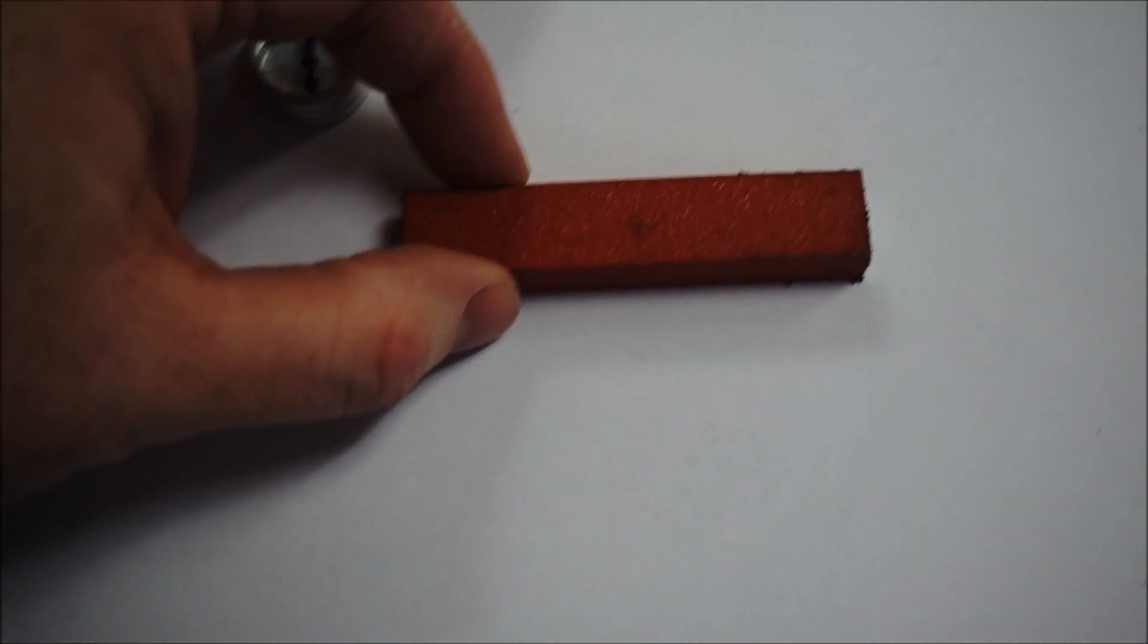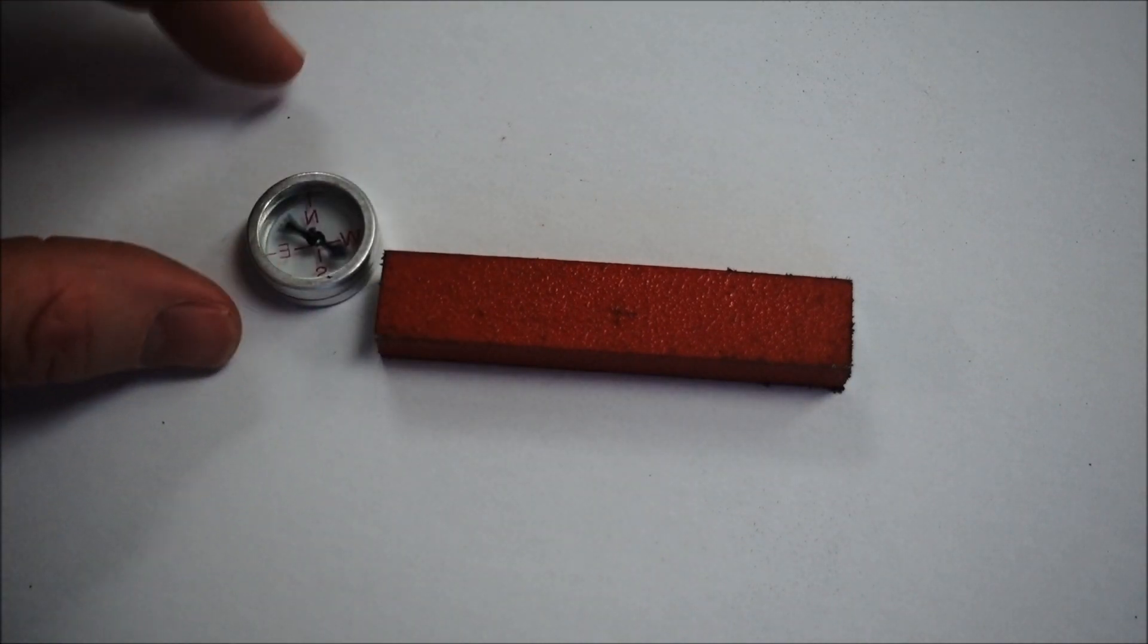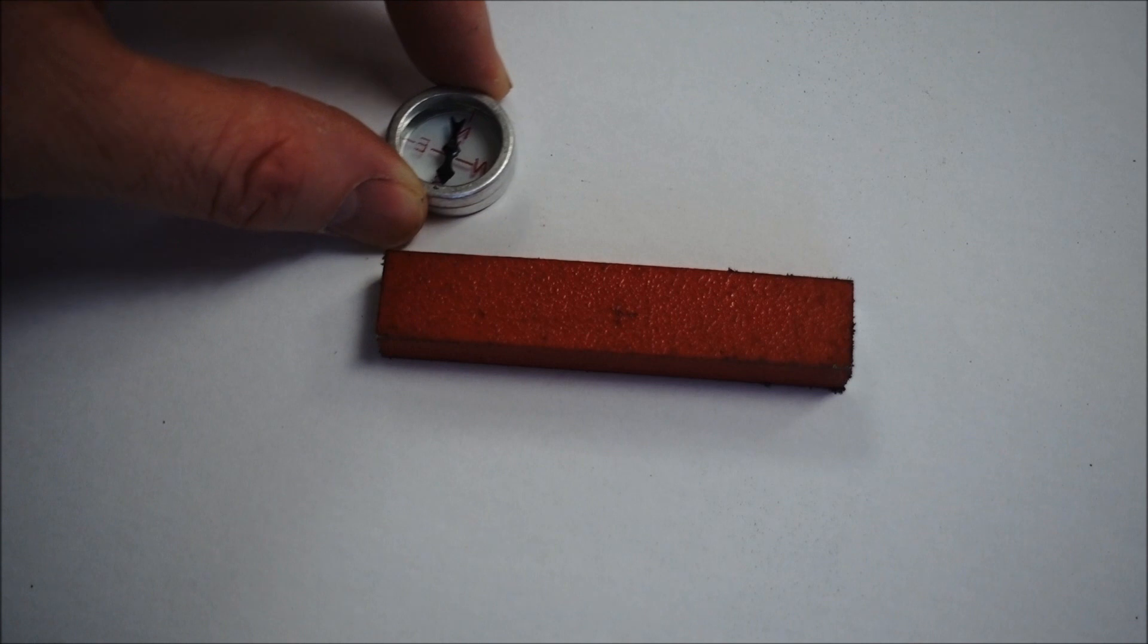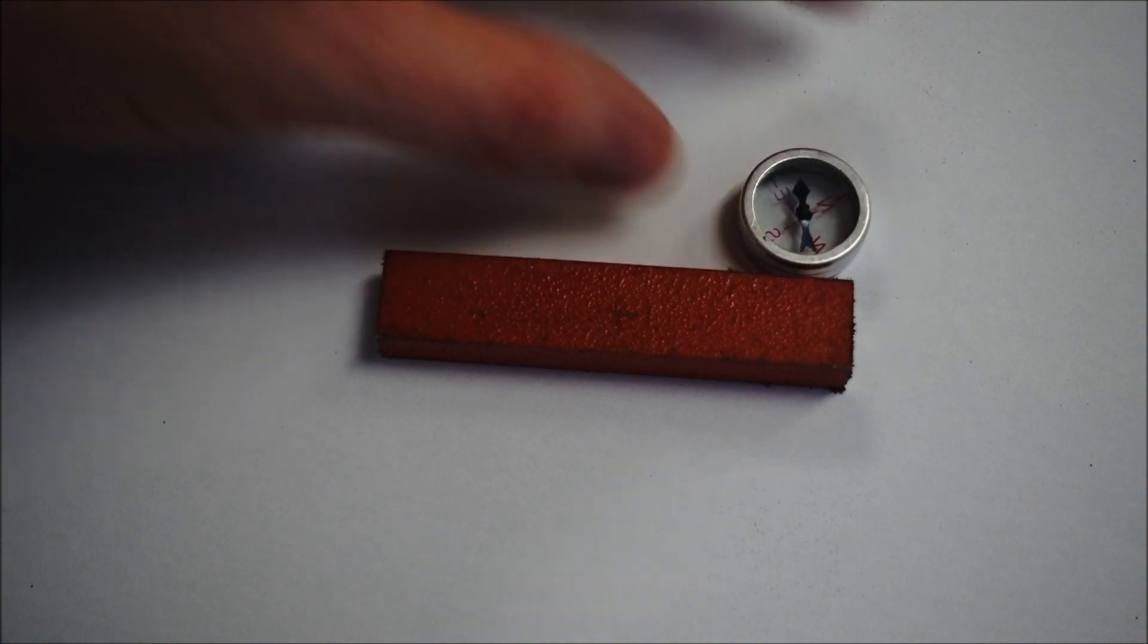I've got an ordinary little compass here. You can see the pole there. You can see the little compass. If you watch, it moves right the way around to another pole there.